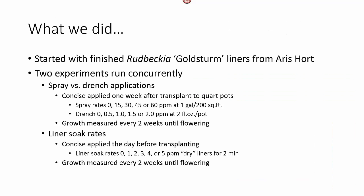For this particular study we actually had two experiments running concurrently using the same batch of liners that we purchased from Aris Horticulture. In the first study we were comparing a spray versus a drench application of Concise. The treatment was applied one week after the liners were transplanted into quart pots. We used four spray rates and a control at the label recommended volume, and we used four drench rates plus a control at two fluid ounces per pot.